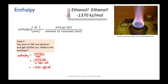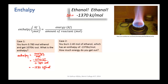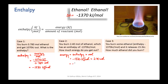Now that you know the enthalpy of combustion for ethanol, say you burn 2.40 moles of ethanol. You can rearrange the equation to find the energy released: energy equals enthalpy times moles, which is −1,370 kJ/mol × 2.40 mol = −3,290 kJ. That means 3,290 kilojoules of energy should be released when 2.40 moles of ethanol are burnt.